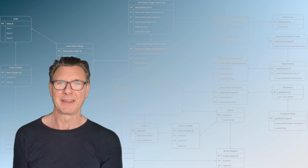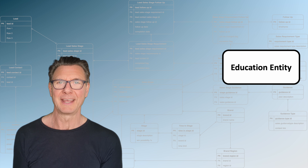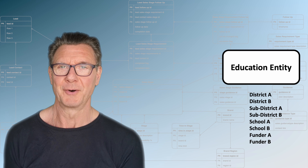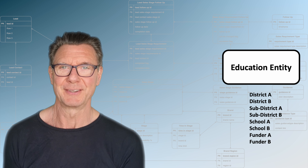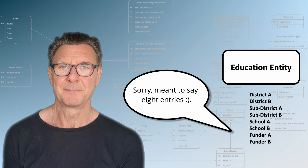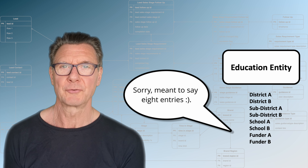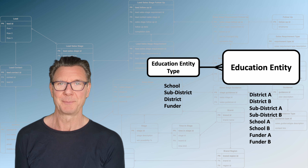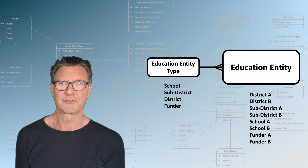Let's start with a simple data model and an entity called Education Entity. This entity contains all participants in the education system. Let's populate the data model with six entries: District A, District B, Sub-District A, Sub-District B, School A, and School B. For each participant, there is also a type, and the types are school, sub-district, district, or funder.